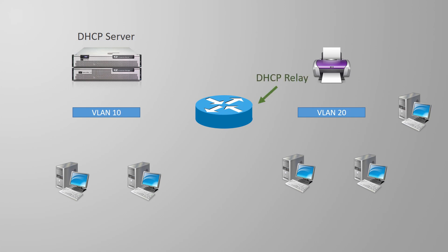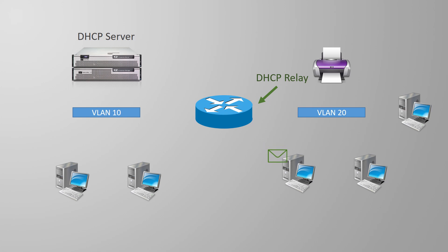We can configure an interface on a router to act on the DHCP server's behalf. When a client broadcasts a discover message, it reaches the router configured as a DHCP relay. The router is configured with the IP address of the remote DHCP server, so the relay sends the message directly to that server. The server responds by sending the offer back to the router, which forwards it on to the client. This is very efficient as all DHCP configuration can be kept in one single place.